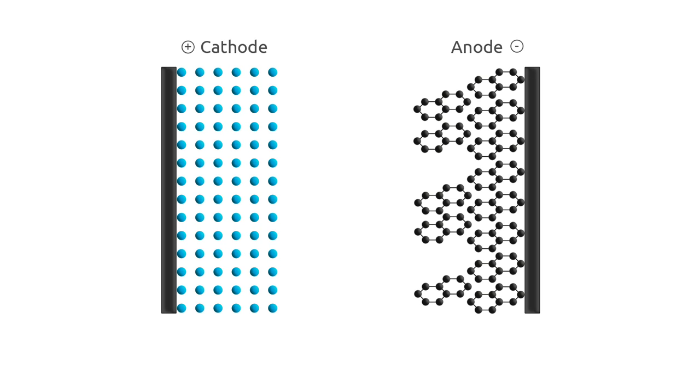To allow the transport of electricity, the cathode is placed on highly conductive aluminium foil, the anode on copper foil. The positively charged cathode consists of a lithium metal oxide, the negatively charged anode is made of graphite.